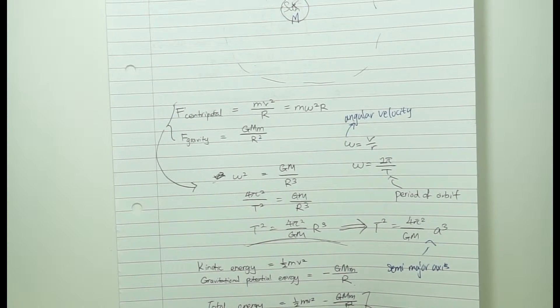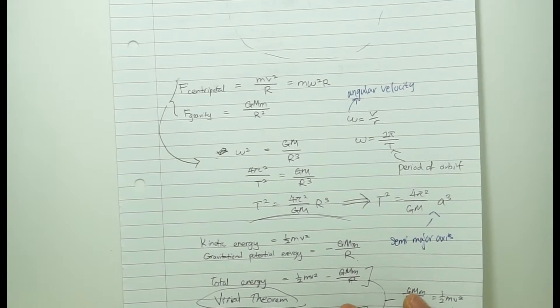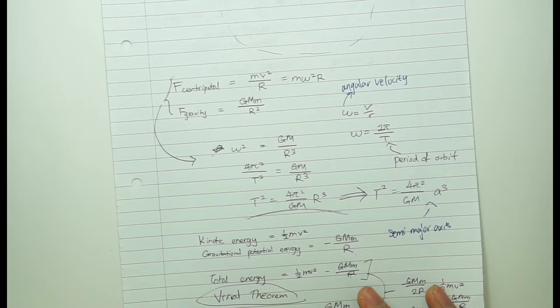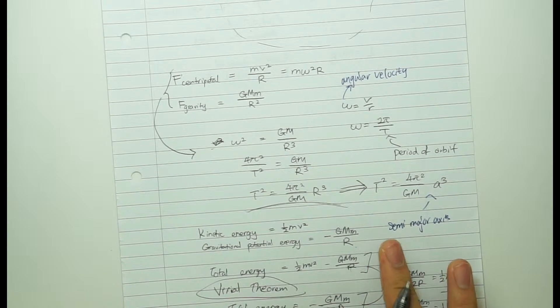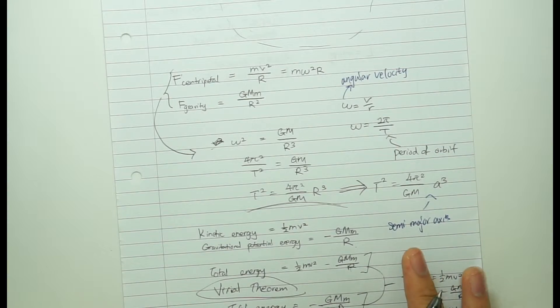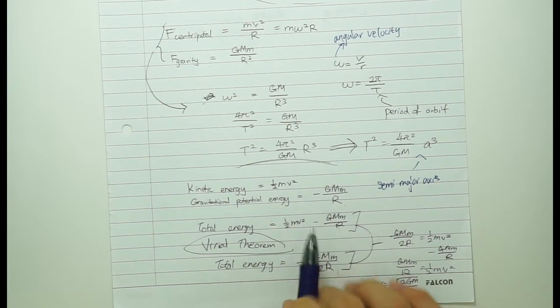Of course, there's some other fancy way that you can derive it for elliptical orbits, but you can just cheat and convert r to a while a is the semi-major axis. So that's like the entire basics of celestial mechanics. Of course, problems can come in all different kind of funny ways. You have to experience it for yourself and do the IOA problem booklet.